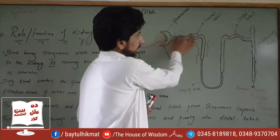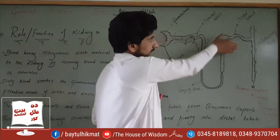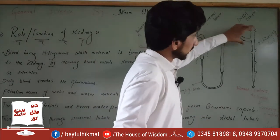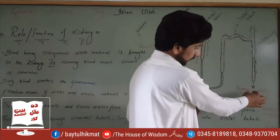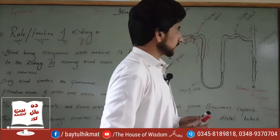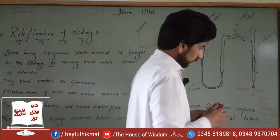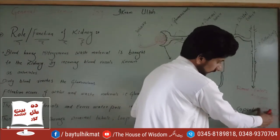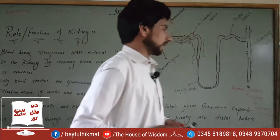The waste material is filtered in the glomerulus and Bowman's capsule, then passes via the proximal tubule, loop of Henle, and distal convoluted tubule. Finally, the waste material passes to the collecting duct, then to the renal pelvis, and via the ureter to the urinary bladder, and out of the body.